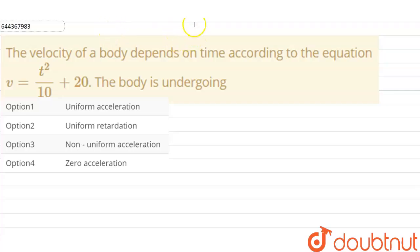Hello everyone, so our question is, the velocity of a body depends on the time according to the equation v is equal to t square upon 10 plus 20. The body is undergoing, our options are uniform acceleration, uniform retardation, non-uniform acceleration and zero acceleration.